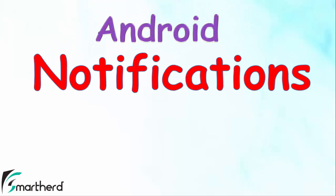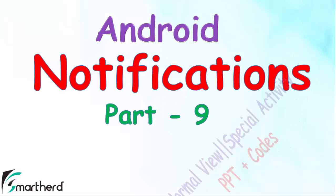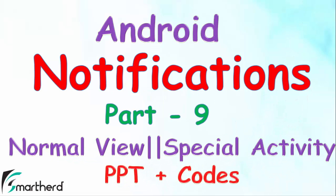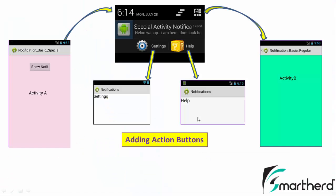Welcome back to the 9th part of the Android notifications tutorial. In this video we are going to add action buttons in our notification of special activity. We are going to add the settings and help buttons in our special activity notifications. When the user clicks the settings button it will open the settings activity, and when the user clicks the help button it will open the help activity.